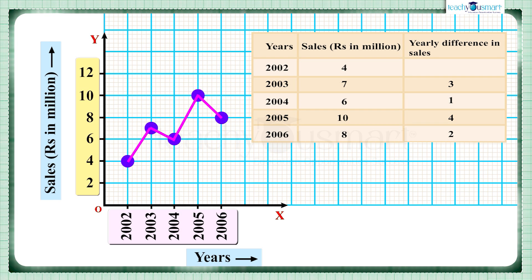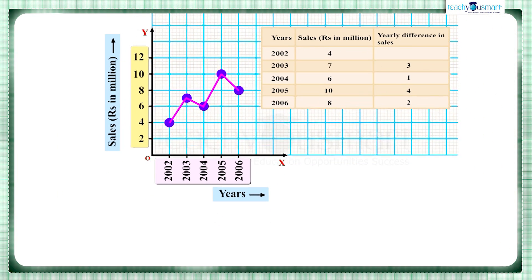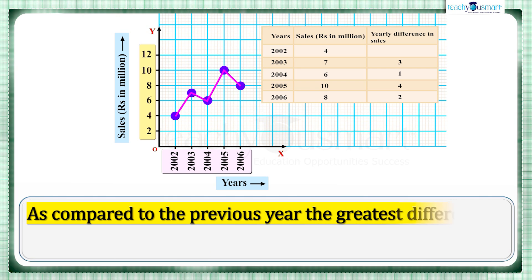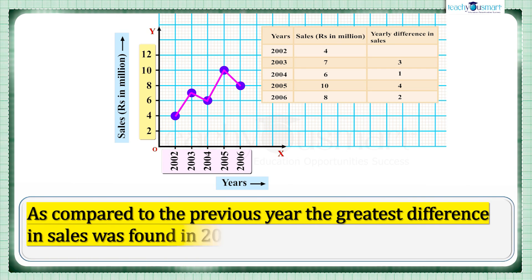We can observe the greatest difference in sales between 2004 and 2005. That is, as compared to the previous year, the greatest difference in sales was found in 2005.